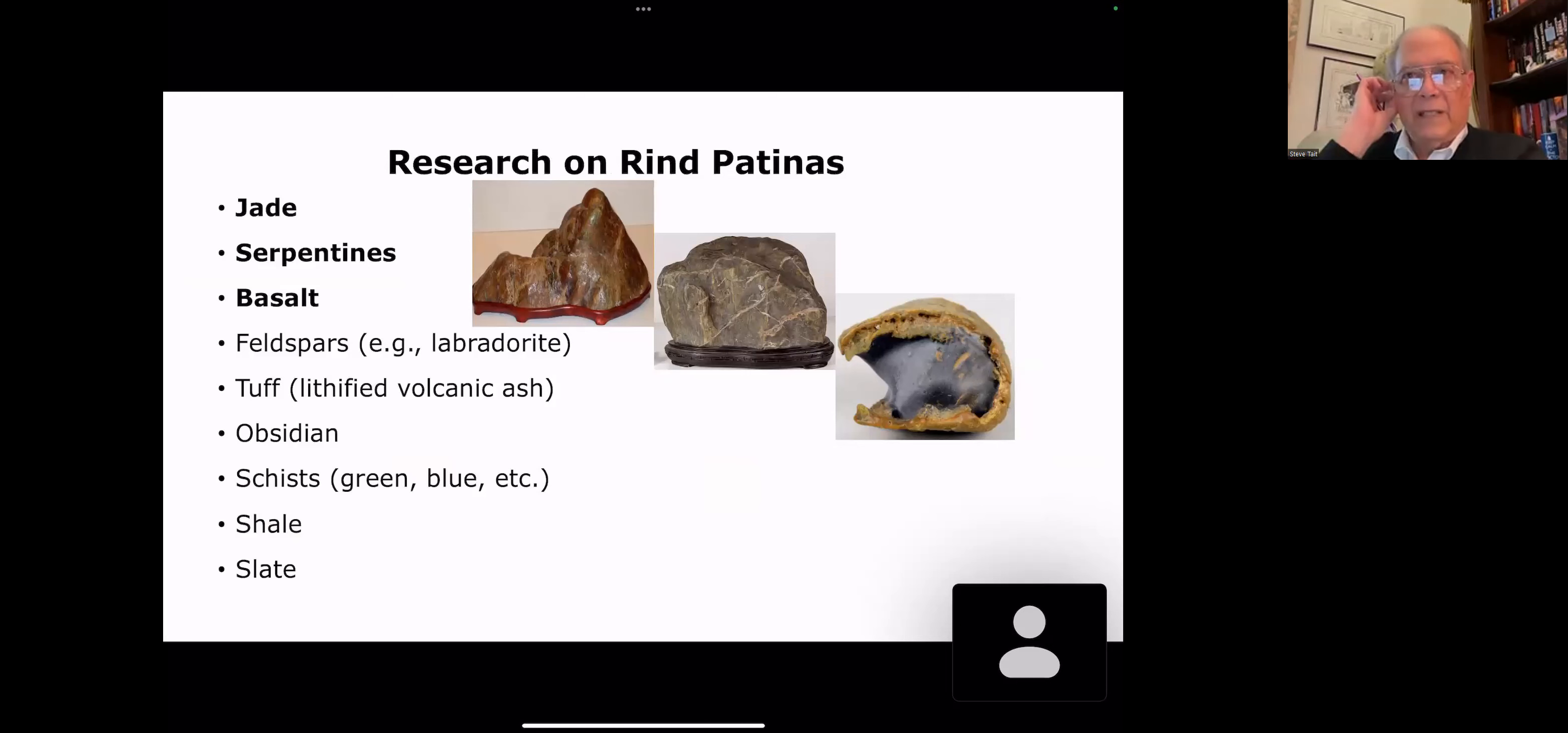So let's talk about what research is going on with rind patinas. If you start at the top, you see a kind of a laundry list of different stones that have been studied. Jade, serpentines, basalts, feldspars, tuff, which is a lithified volcanic ash, obsidian schists. We saw the green schists before the program began, shale and slate. We're going to restrict our discussion to jade, serpentine, and basalt.